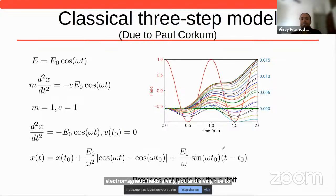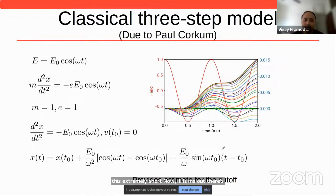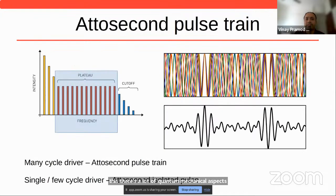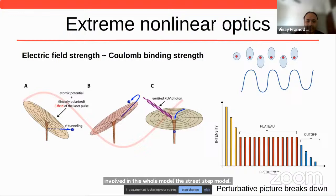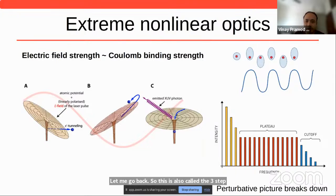It's essentially that you have all these high harmonics adding up coherently, giving rise to this extremely short pulse. There is something very interesting: although there are a lot of quantum mechanical aspects involved in this three-step model — ionization, acceleration, and then recombination — there are a number of features in this harmonic spectra that can really be explained with just high school physics.